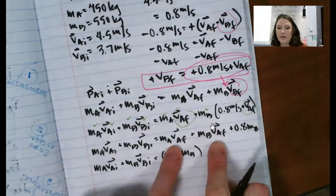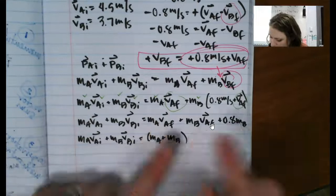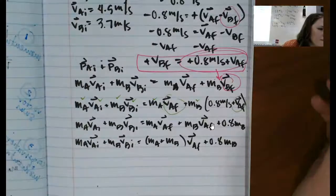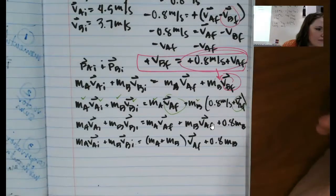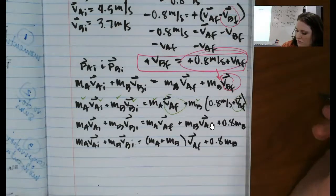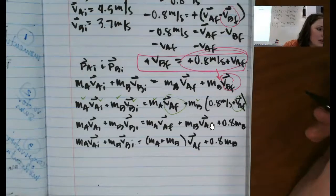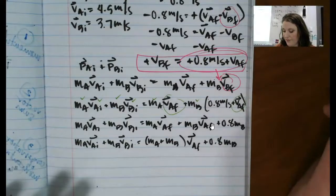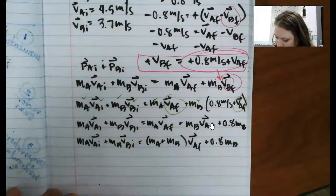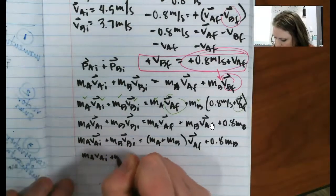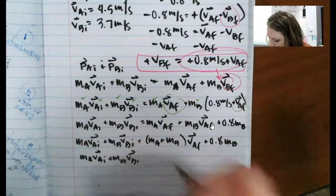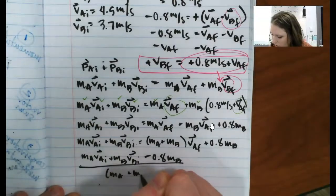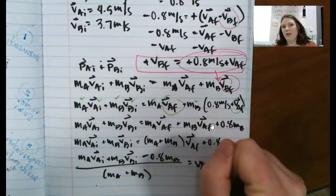So I'm going to combine my two terms that have a final velocity of A in them. And then I'm going to do some rearranging. I'm just checking my answer guide to make sure I don't make any mistakes here. So I want to solve for that V A F. So it's both vectors minus 0.8 times the mass of velocity of B. And that's all going to be divided by mass A plus mass B. And that should be equal to velocity of A.